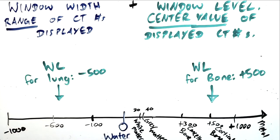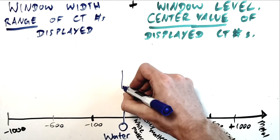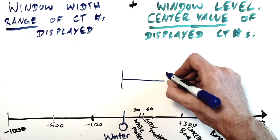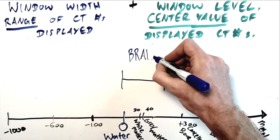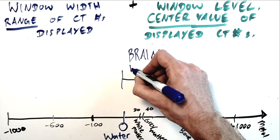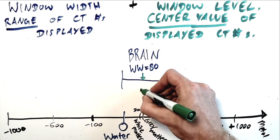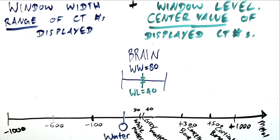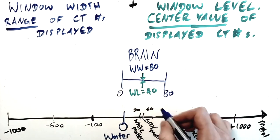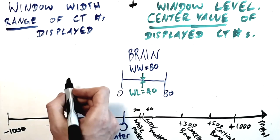To combine these principles of window width and window level, any window setting for viewing a certain type of tissue will have a window width describing the range of CT numbers shown and a window level describing the CT number where that range is centered. To return to our example of the brain window, a typical brain window would have a window width of 80 and a window level of 40. This means that our width of 80, that range of 80 is centered on the number 40. And all gray levels between black and white are displayed for the various densities between 0 and 80 Hounsfield units.